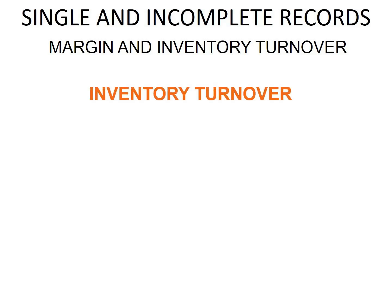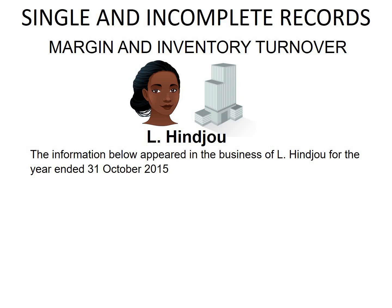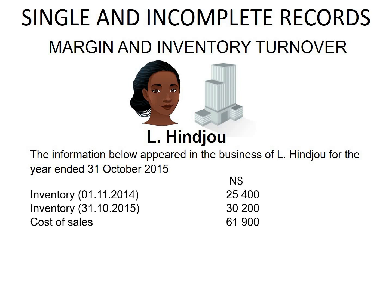Now let's have a look at inventory turnover. This is the number of times that inventory of a business is replaced during an accounting period, or the number of times inventory is replaced during a year. The information below appeared in the business of L Hinge for the year ended 31 October 2015. Opening inventory was 25,400, closing inventory was 30,200, and cost of sales was 61,900.